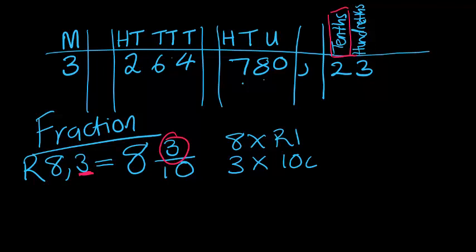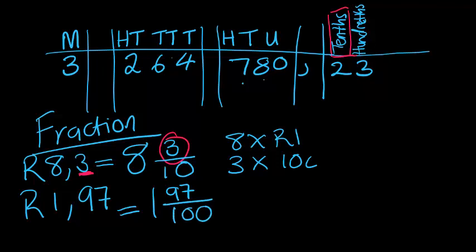This is 8 wholes and 3 tenths of a rand. If I had a rand and I divide it into 10 equal pieces, I'm only counting 3 of them. Each of the pieces will be 10 cents. Let's do another one. If I had 1 rand and 97 cents, this would be equal to 1 whole and 97 over 100. We know that the 9 is a tenth. That 9 means that I've got 9 times 10 cents. A tenth is 10 cents in our money.